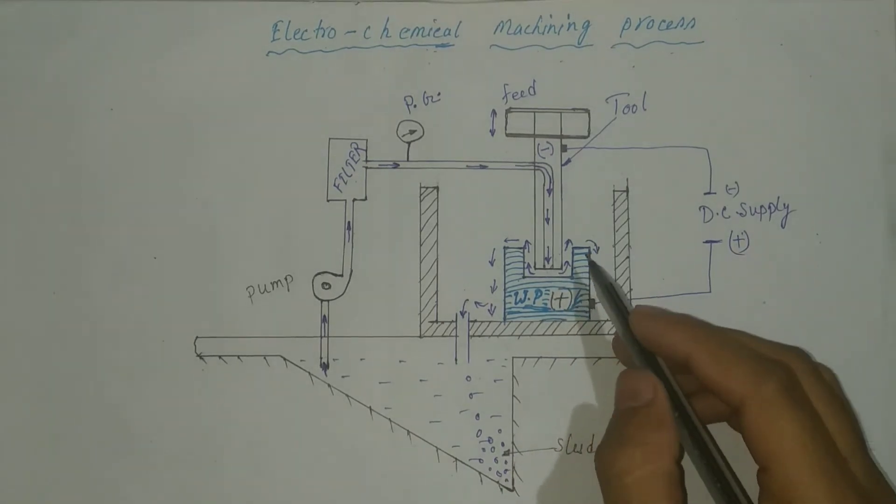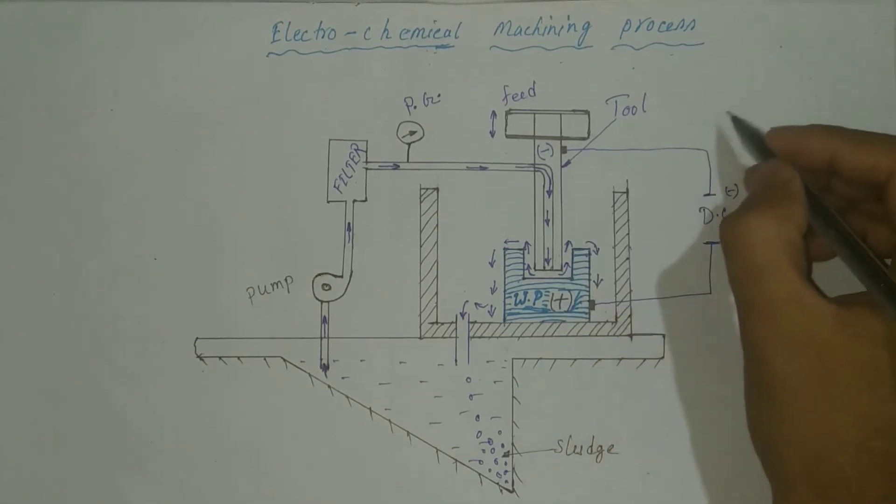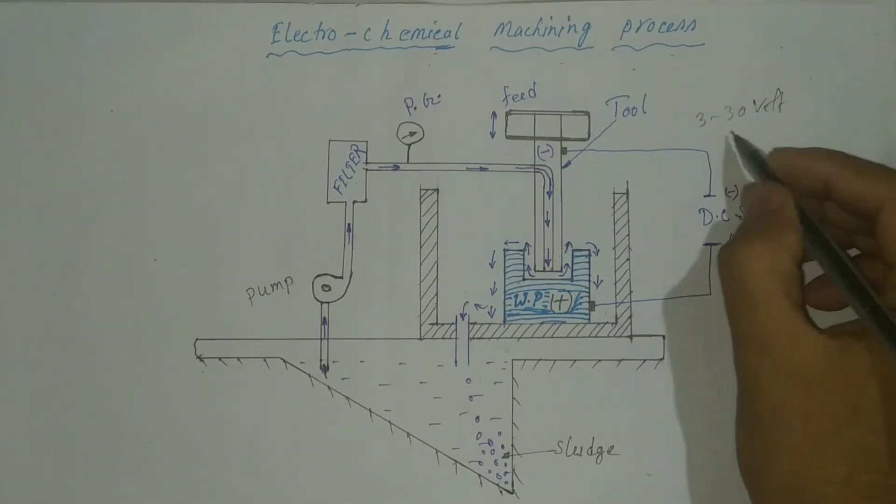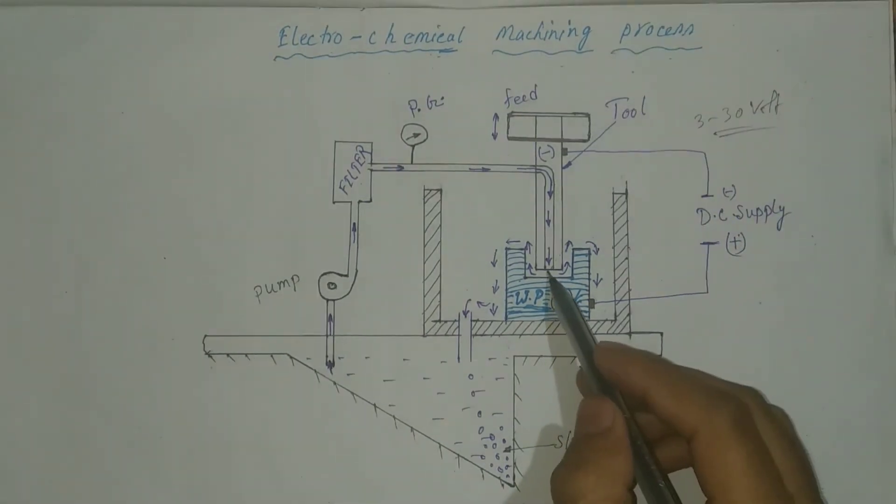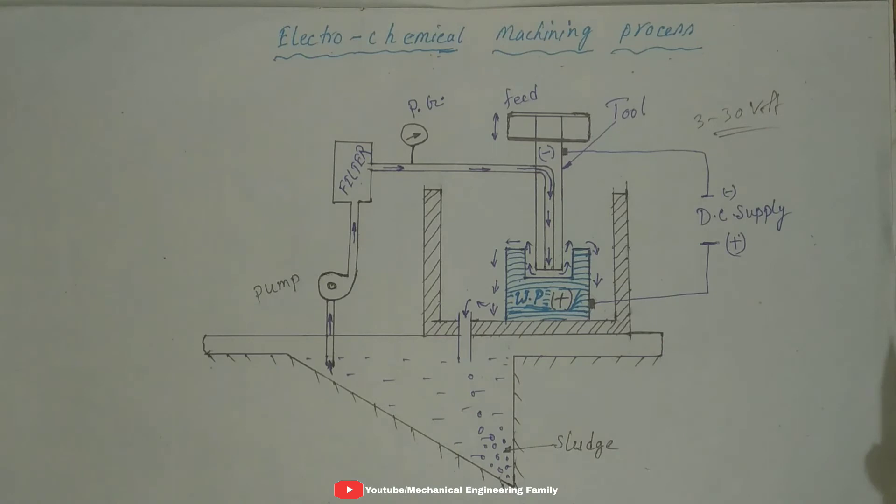And the voltage applied between the tool and the workpiece is 3230V. The electrolytes fill this gap between the tool and the workpiece and complete this circuit. And due to the applied voltage, the positively charged particle is attracted towards the negative.